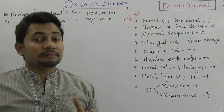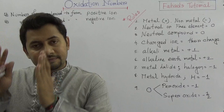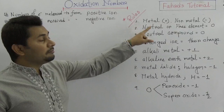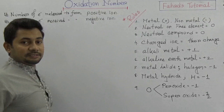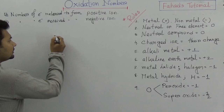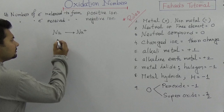Rule number 1. We know about metals and non-metals. In the periodic table, group number 1, 2, and 3 on the leftmost side are metals. The other groups like 15, 16, and 17 are non-metals. Metals have a positive oxidation number because they usually release electrons. For example, sodium releases one electron and forms sodium plus (Na⁺).